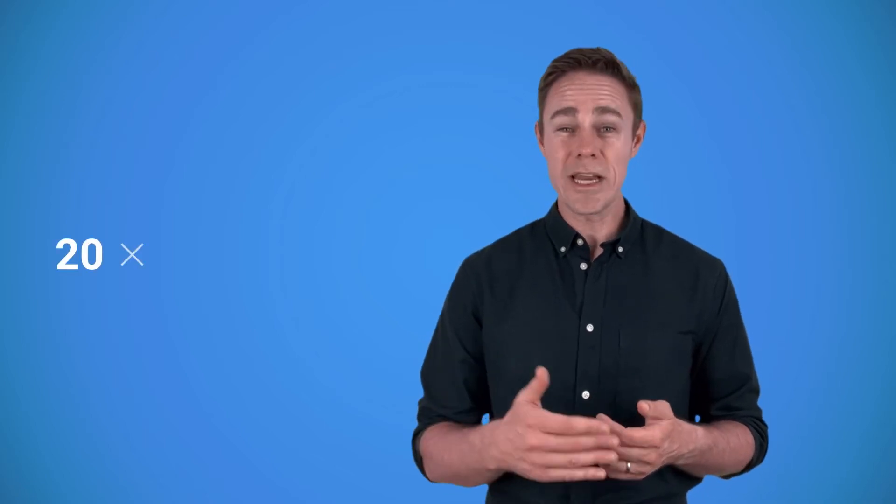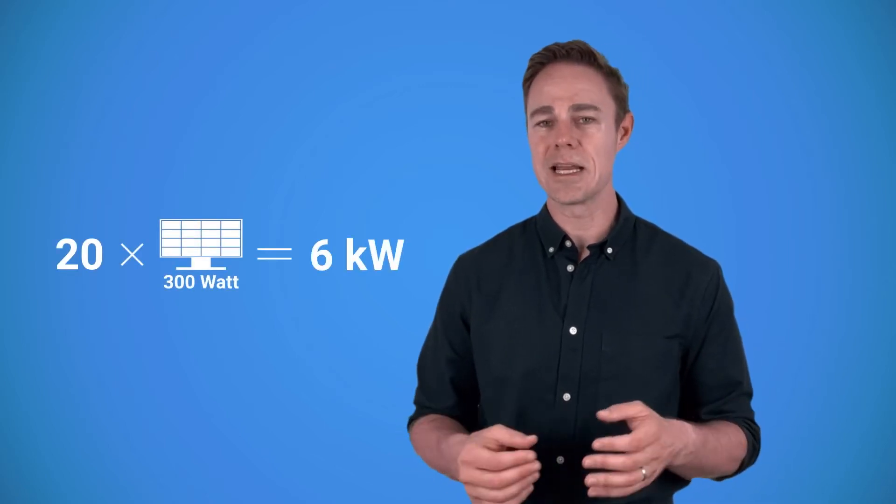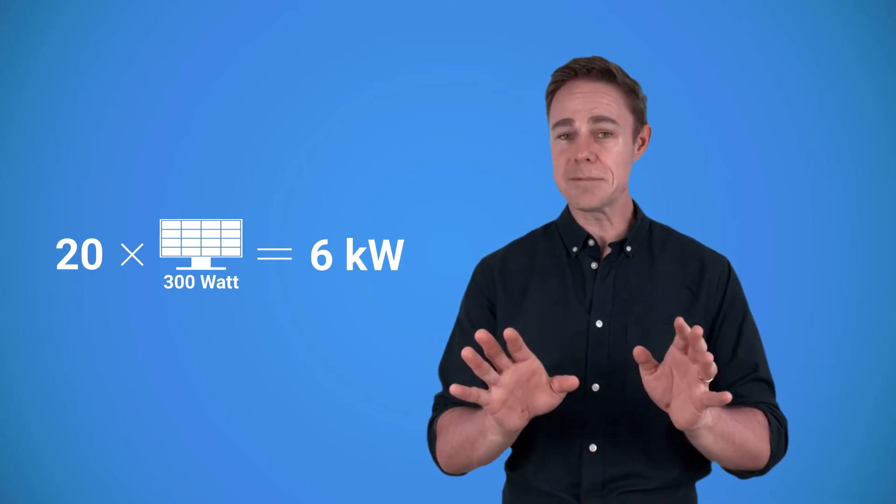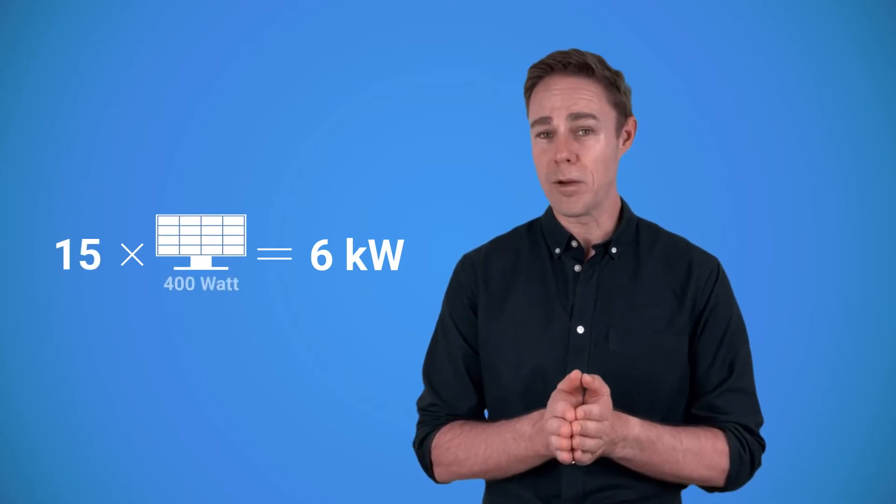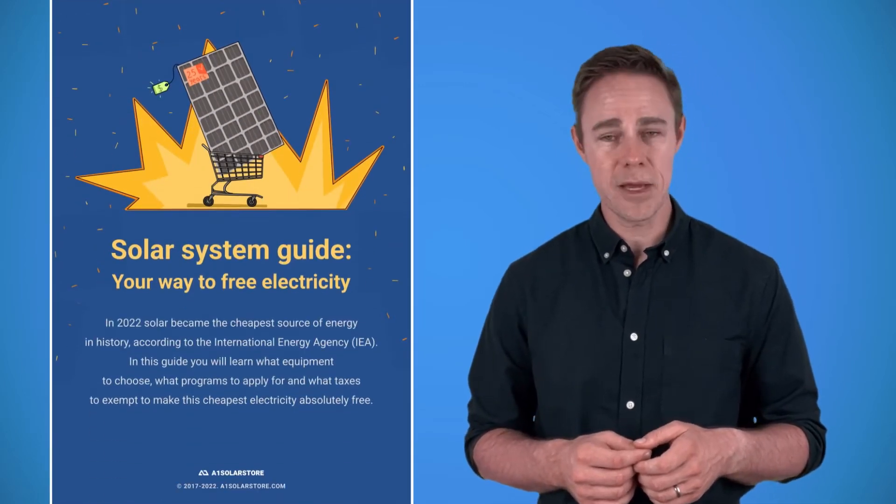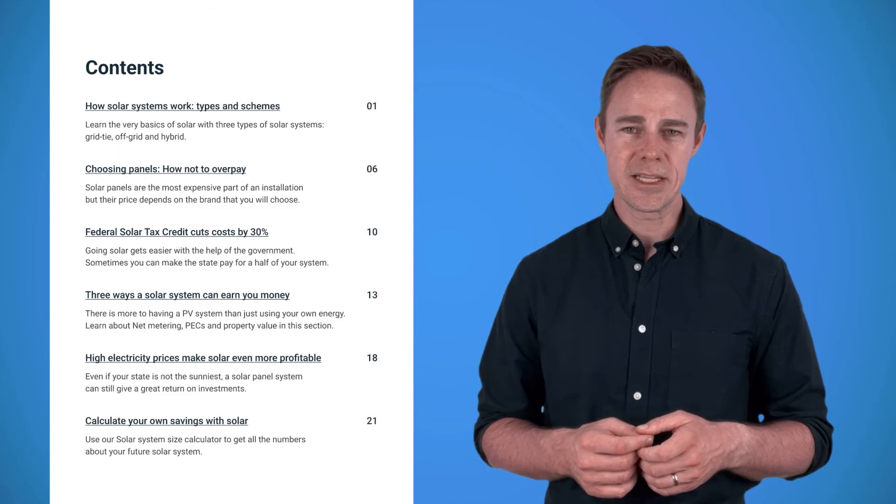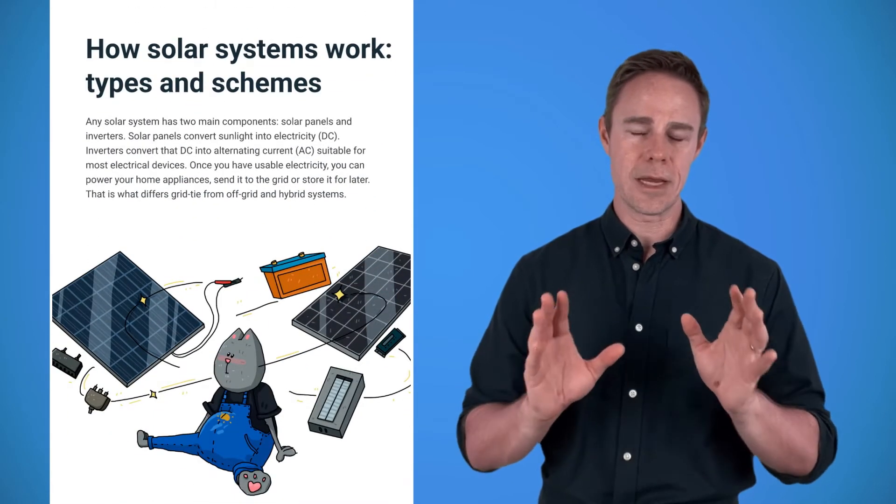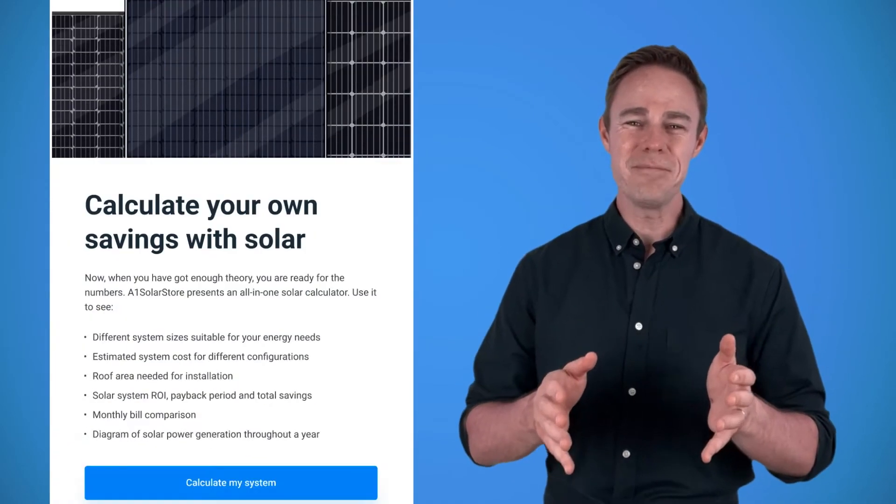For example, you would need 20 300 watt modules for a 6 kilowatt system. You could build the same system with 15 400 watt panels. The trend towards bigger panels also rhymes well with the rising size of an average home system in the US, which increased from 6 kilowatts to 7 kilowatts. We talk in detail about factors that affect your profits from solar in our guide on saving money with solar energy. It explains in detail all the things that I'm not going to be able to cover in this video. The guide is free, and you can find it in the description below the video.